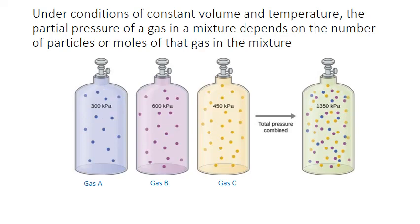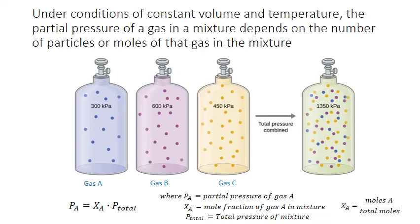Mathematically, this relationship can also be stated as: the partial pressure of gas A equals the mole fraction of gas A times the total pressure of the mixture, where mole fraction is simply defined as the moles of the individual gas A divided by the total moles of gas within the mixture.